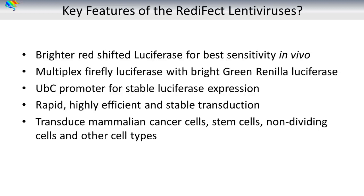Key features of the Red Effect lentiviruses: they offer brighter red-shifted Luciferase for best sensitivity in vivo, and multiplex Firefly Luciferase with bright green Renilla Luciferase. They utilize the Ubiquitin C promoter for stable long-term Luciferase expression, and offer rapid, highly efficient, and stable transduction. Red Effect lentiviruses can be used to transduce mammalian cancer cells, stem cells, non-dividing cells, and other cell types.